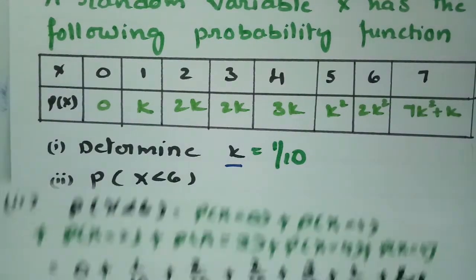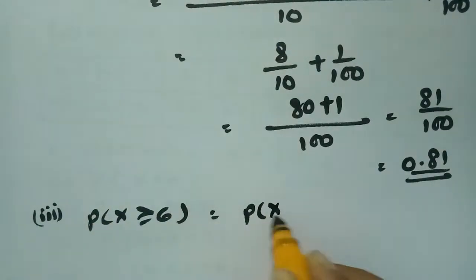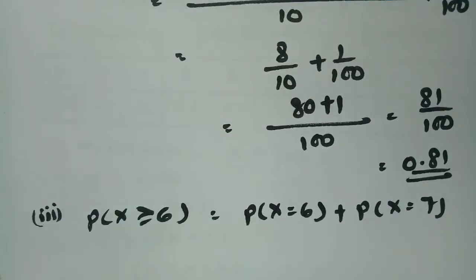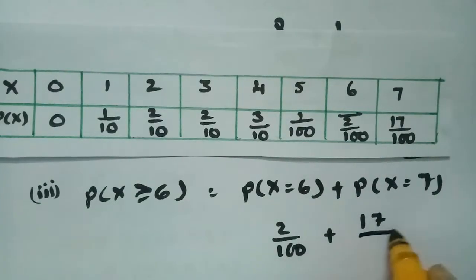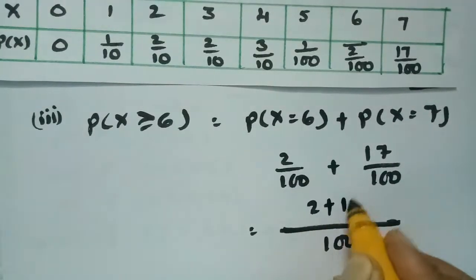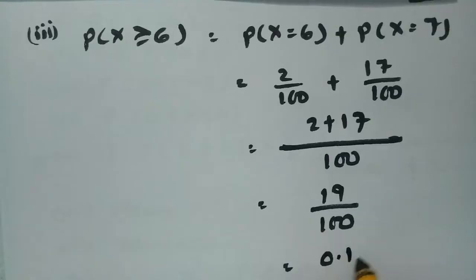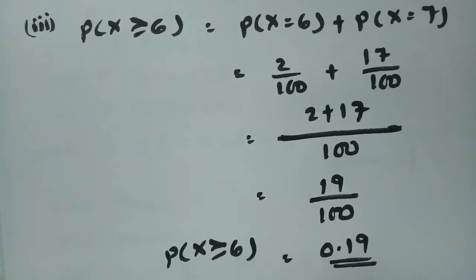The next question is P(X ≥ 6). That is P(X=6) + P(X=7). For X=6 the value is 2k² = 2/100, and for X=7 the value is 7k²+1 = 17/100. Taking LCM as 100, this is 2 + 17 = 19/100 = 0.19. Therefore P(X ≥ 6) = 0.19.